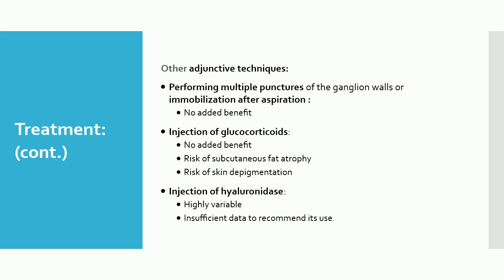Injection of ganglion cysts with glucocorticoids provides no added benefit, and there is a potentially increased risk of subcutaneous fat atrophy and skin depigmentation. Success rates with the injection of hyaluronidase into the ganglion are highly variable, and there are insufficient data to recommend its use.